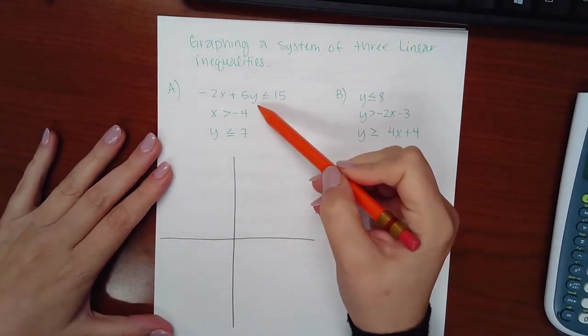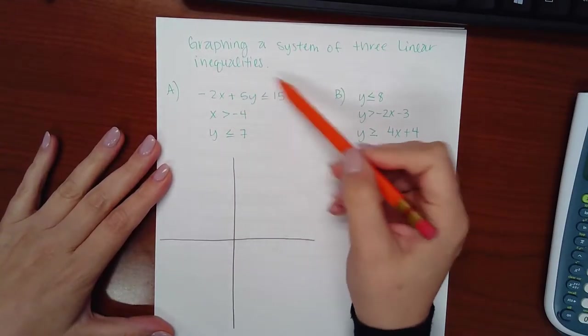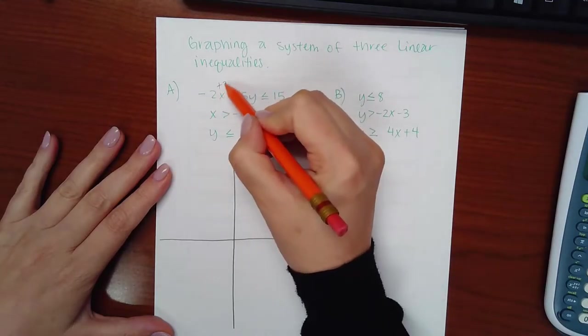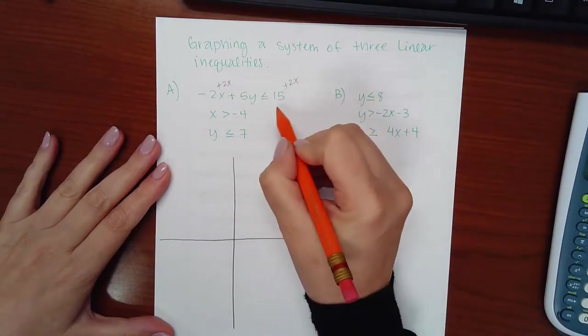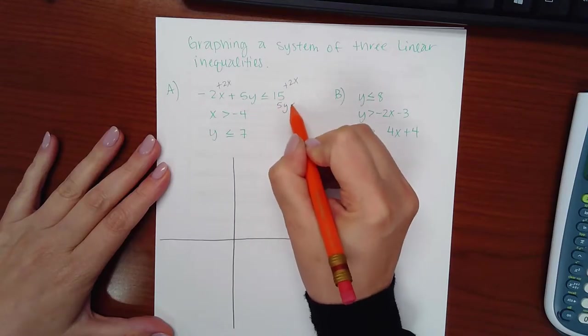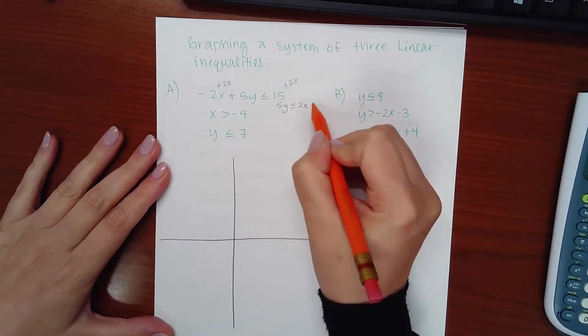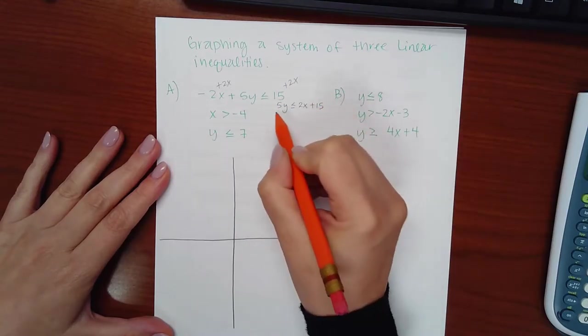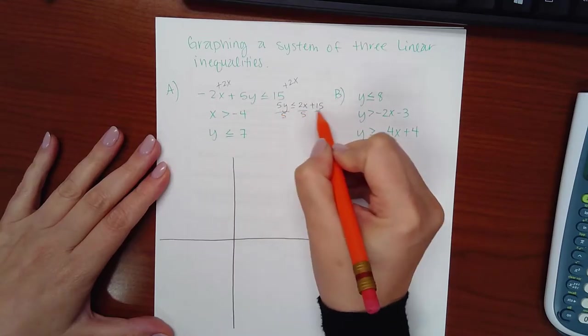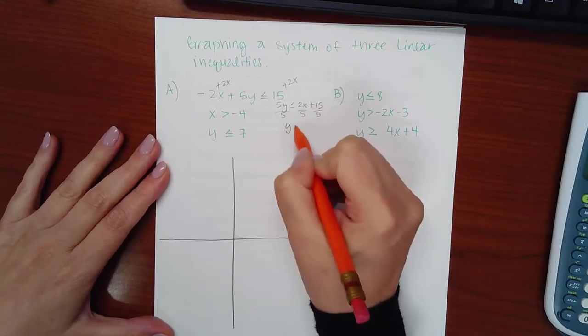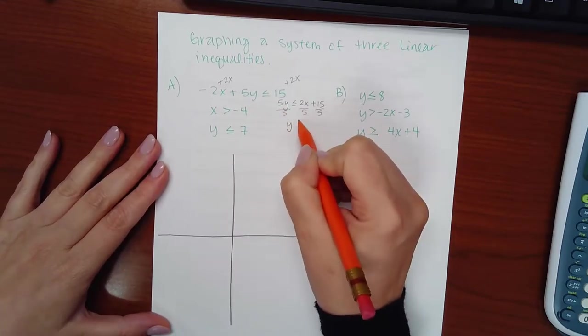Before I graph the top one, I need to put it in slope-intercept form. I'm actually going to add 2x to both sides of the equation, and I will get 5y is less than or equal to positive 2x and positive 15. Then I will divide everything by 5, and I didn't divide by a negative, so the symbol will stay the same. Now I have it in the correct form.